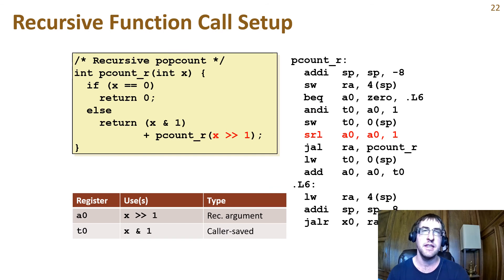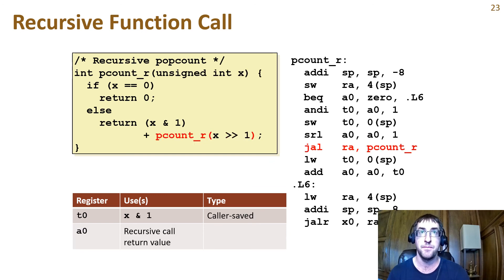We don't need the value of x anymore, so now just shift the input argument by 1 in a0 to get the recursive call argument. Now we make the recursive call, but the value of x and 1 will not be in t0 when the recursive call returns.